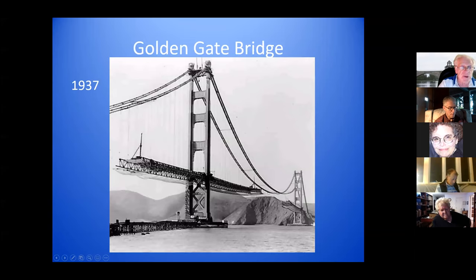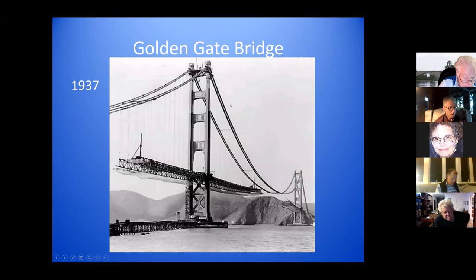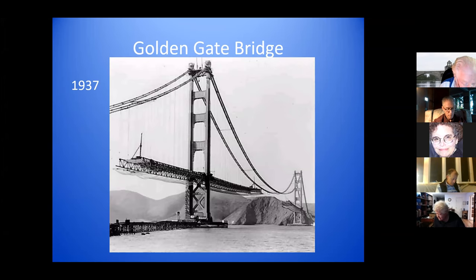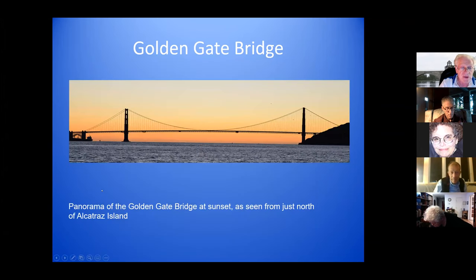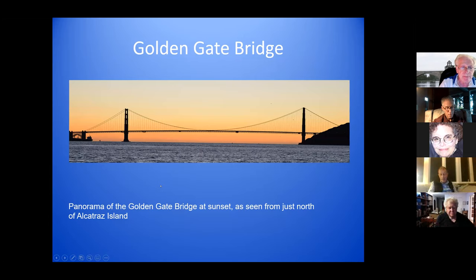This is the Golden Gate Bridge, which was opened in 1937. It's being built the same way the Manhattan Bridge was built, and it also has four suspension cables. This bridge, much more than the Manhattan Bridge, is considered an engineering marvel, though the Manhattan Bridge was impressive when it was built. This is the Golden Gate Bridge as seen from the side, from just north of Alcatraz Island. The central span is 1,800 feet — not even half a mile.